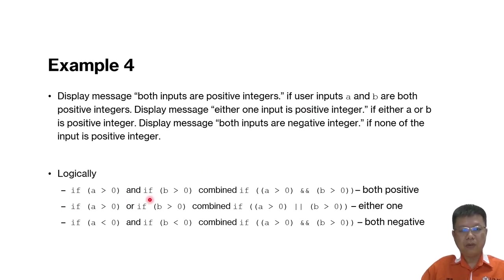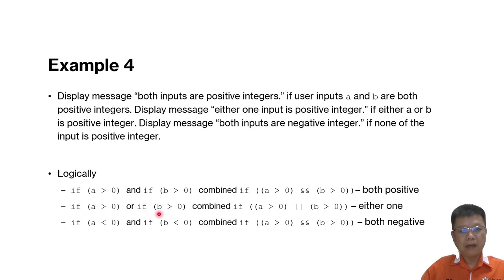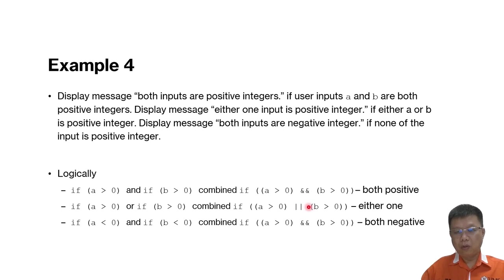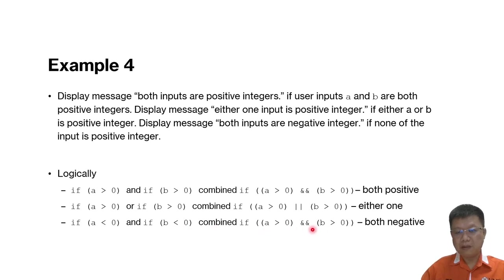Logically: if A > 0 AND B > 0 combined into one if statement, we test whether both are positive. Then if A > 0 OR B > 0 — using OR, either one being positive satisfies the condition — we display 'either one input is positive integer.' The last case is A < 0 AND B < 0, to check both are negative.